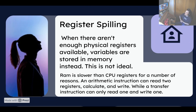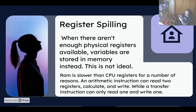So now we're going to touch on register spilling. With 32 registers, maybe it's not enough for more complex programs. When there aren't enough physical registers available, variables are stored in memory instead. This is not ideal because RAM is slower than CPU registers. An arithmetic instruction can read two registers — it can read Y and Z, calculate them, add them together, and write the result to a third register X. A transfer instruction can only read one and write one, and a transfer instruction is required if you're retrieving something from memory.